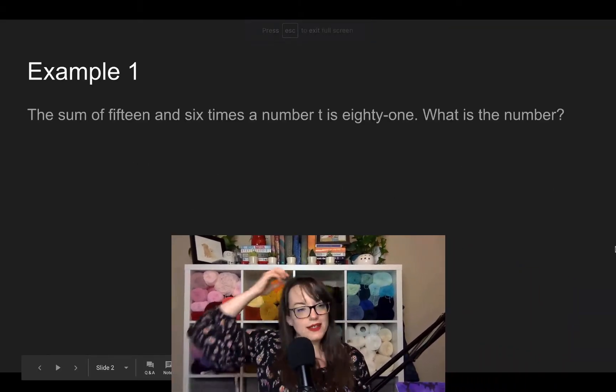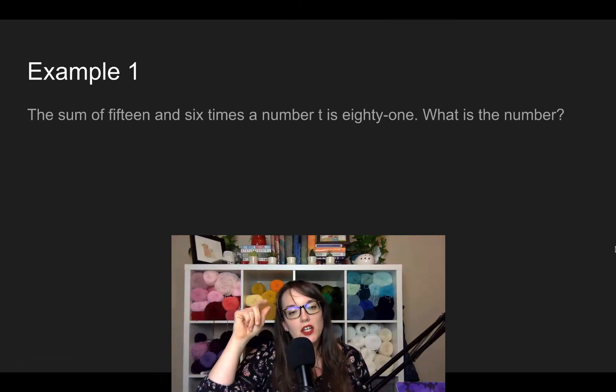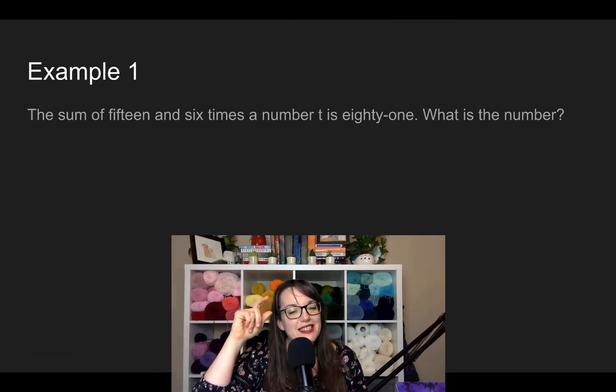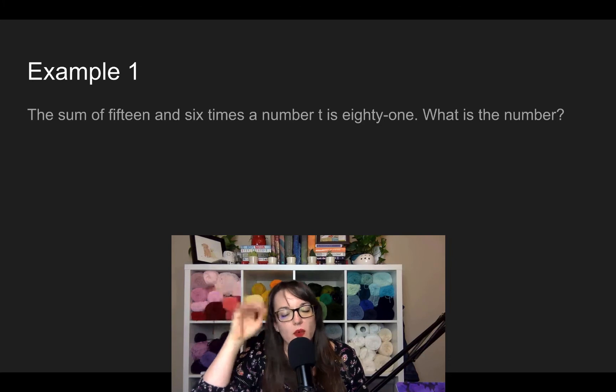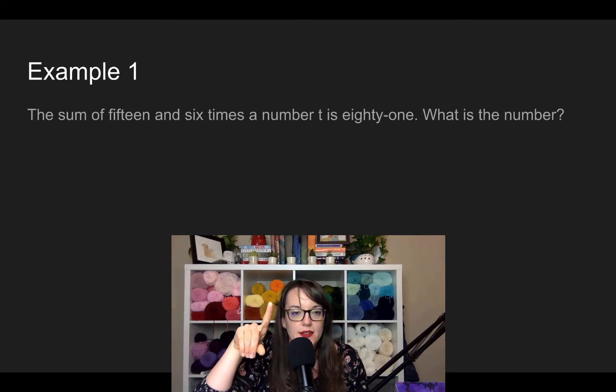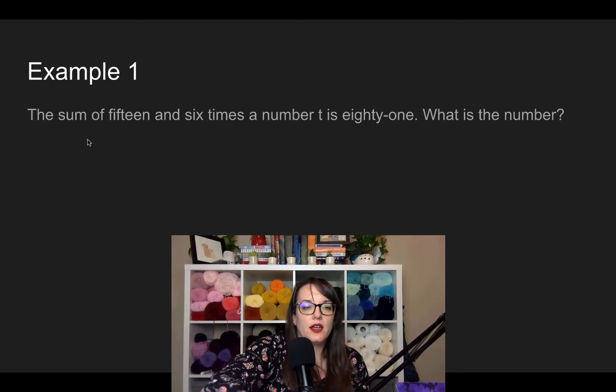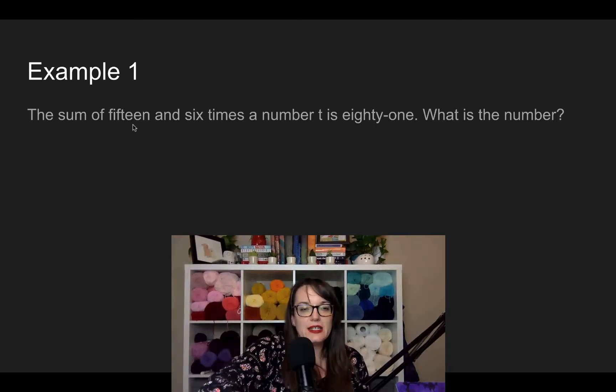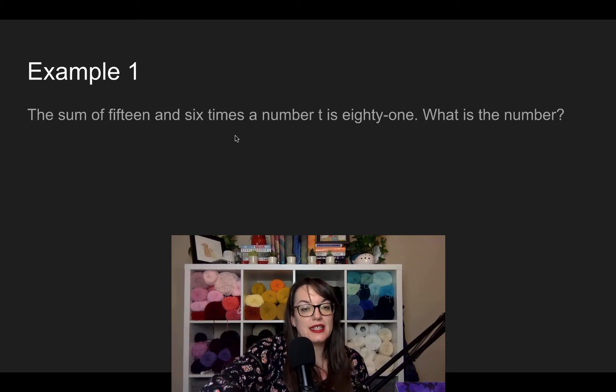Because I think this is just best in practice. So we've got the sum of 15 and six times a number is 81. Don't worry about the what is the number part. But write that equation. What do you think that equation is going to look like? So I see sum. That means add. We've got sum right here. That's add. So I've got 15 and six times a number. So here's my T. Right here, T. So 15 plus 6T equals 81. All right.